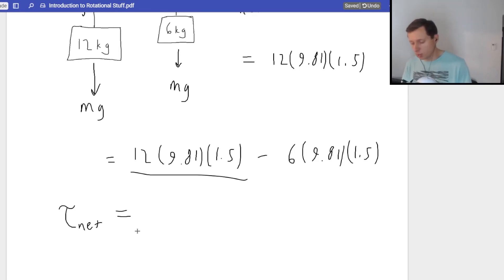Now I can just plug this in a calculator and we'll find our net torque. It's not the final answer quite just yet, but we're almost there. 12 times 9.81 times 1.5 minus 6 times 9.81 times 1.5. We're going to get 88.29. And that's our net torque.